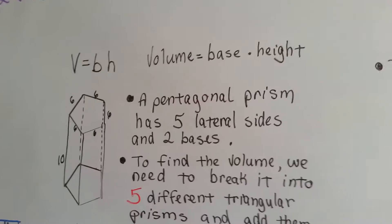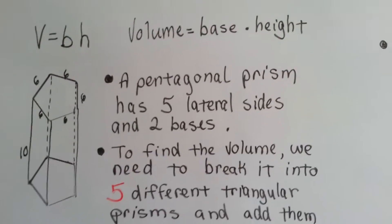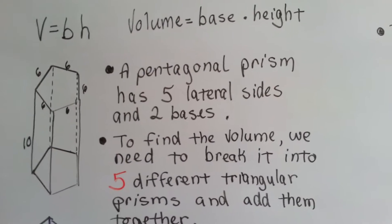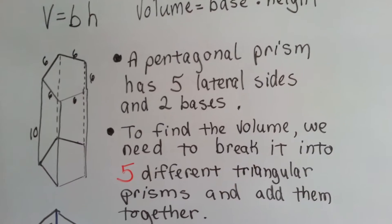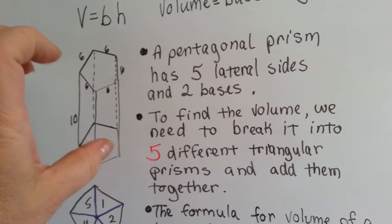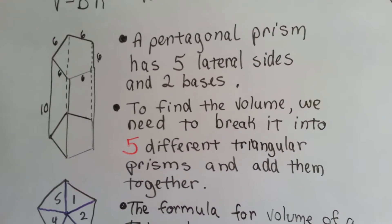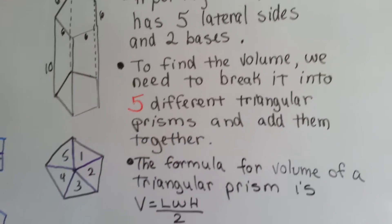The formula to find the volume is volume equals base times height. A pentagonal prism has five lateral sides and two bases. It's got five sides going around and a base on top and a base on the bottom. To find the volume, we need to break it into five different triangle prisms and add them together.